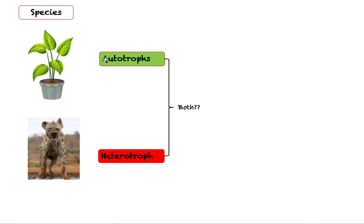Autotroph directly translates to self-feeding — they feed themselves by making their own food. And 'hetero' means different. So heterotrophs feed differently by eating other animals or organisms. They feed by eating something else.